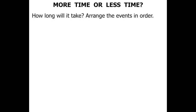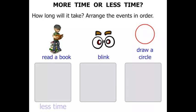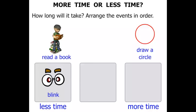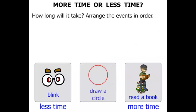How long will it take? Arrange the events in order. We've got reading a book, blink, or draw a circle. We're going to order them from less time to more time. Well it's a blink — it doesn't take very long at all. Reading a book would take the longest time, and draw a circle somewhere in between.